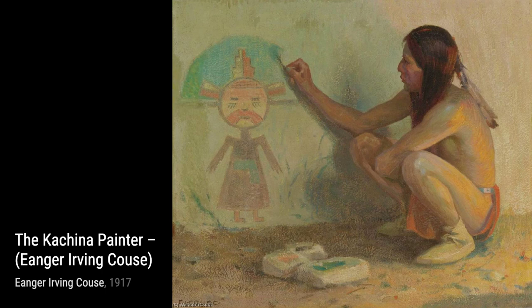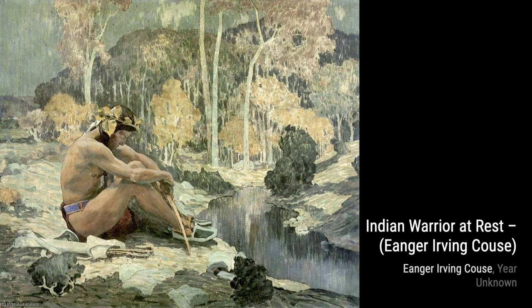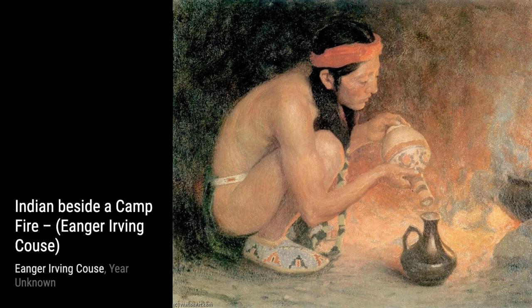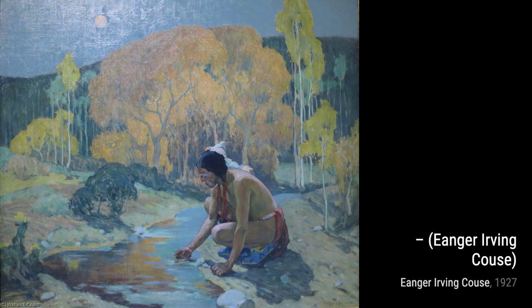In Indian Summer, Kauss captures the vibrant colors and warm tones of the autumn season, depicting a Native American woman amidst the beauty of nature. Moving on to Indian Drinking, Kauss portrays a Native American man taking a moment to quench his thirst, showcasing the simplicity and harmony of everyday life.